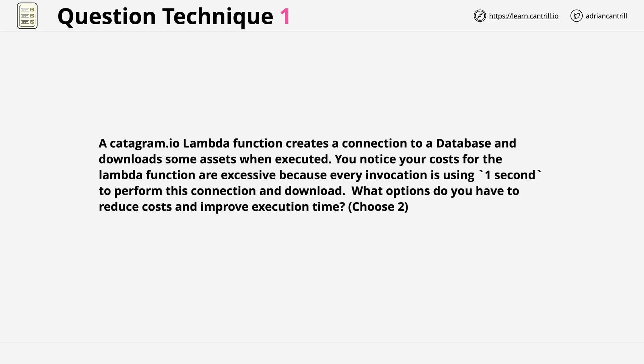The question is: A catagram.io Lambda function creates a connection to a database and downloads some assets when executed. You notice that your costs for the Lambda function are excessive because every invocation is using one second to perform this connection and download. What options do you have to reduce costs and improve execution time? And you're told to choose two. In terms of question length, this is pretty average for an associate level exam.